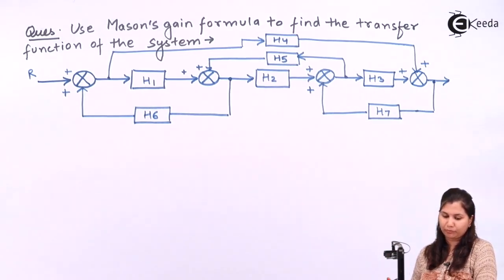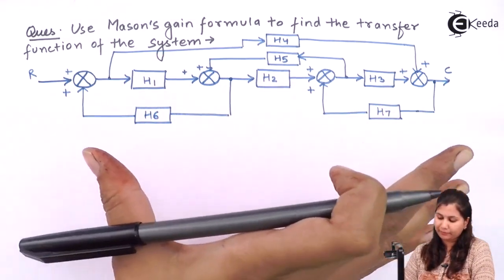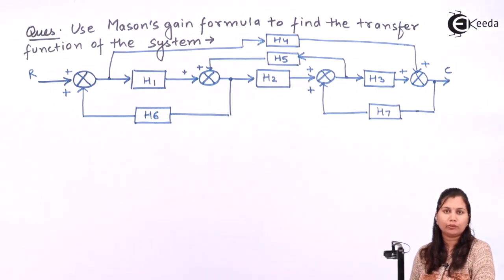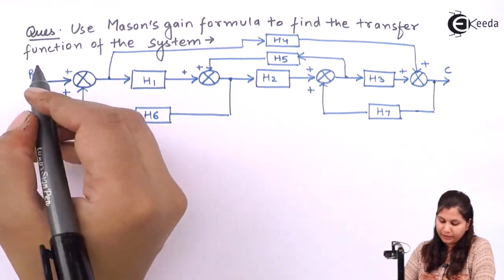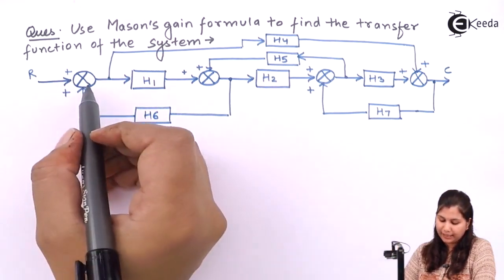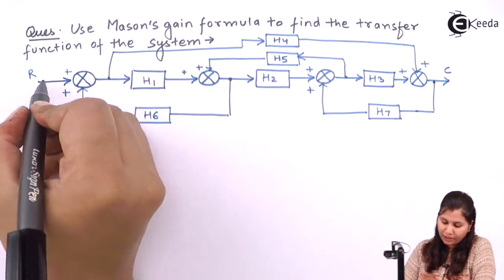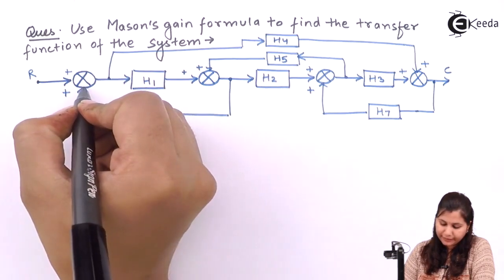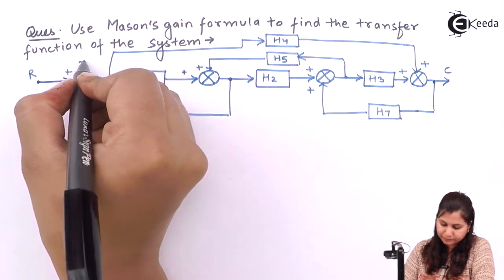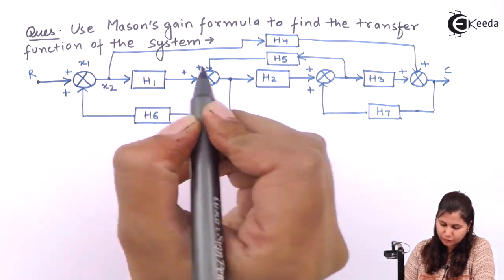For applying the Mason's gain formula we have to convert the block diagram into the signal flow graph. To convert it, first we will make the nodes for each of the variables, the summing points, and the takeoff points. There will be a first node for the input R, then for this summing point we will have node X1, and for this takeoff point we will have X2.